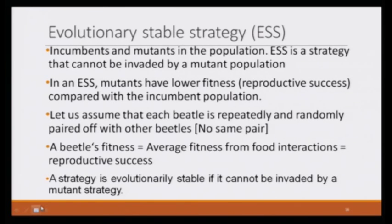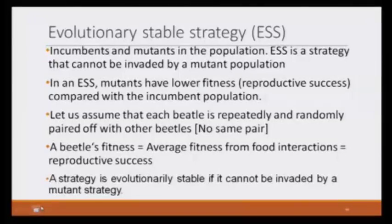If the animal will have higher fitness, they will have higher reproductive success and they would sustain in the population. In this size game, we can say that each beetle is repeatedly and randomly paired with other beetles, because we want to know average fitness. Average fitness would be determined over a longer period of time, through which a beetle would interact with different kinds of beetles. Invasion would become clear soon.